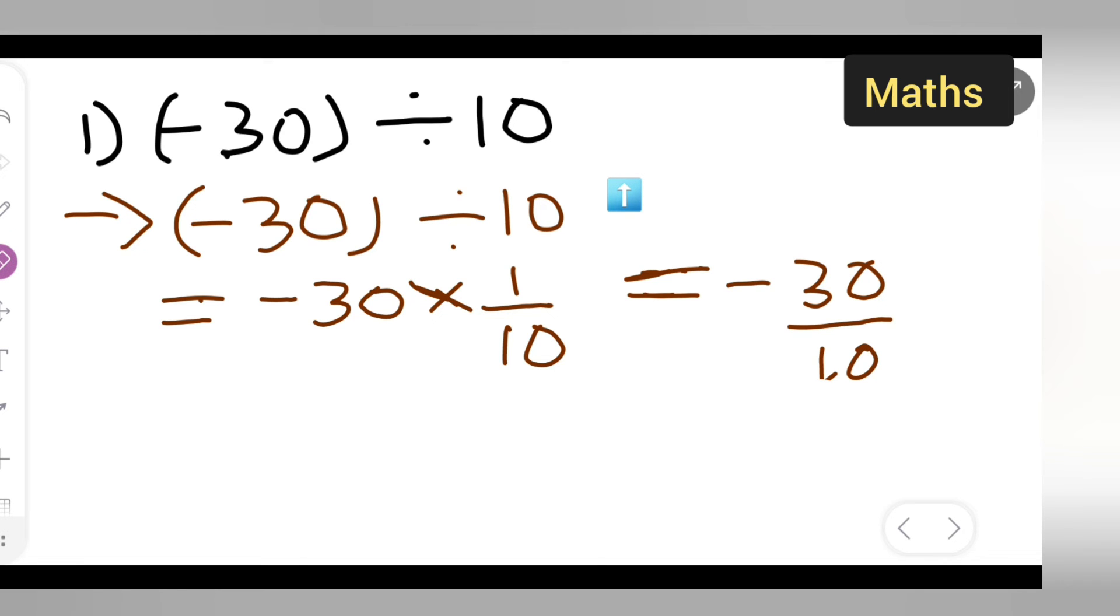So now what you'll have to do is over here, zero, zero will get cancelled and you are left with negative 3. So this is the way you have to divide it.